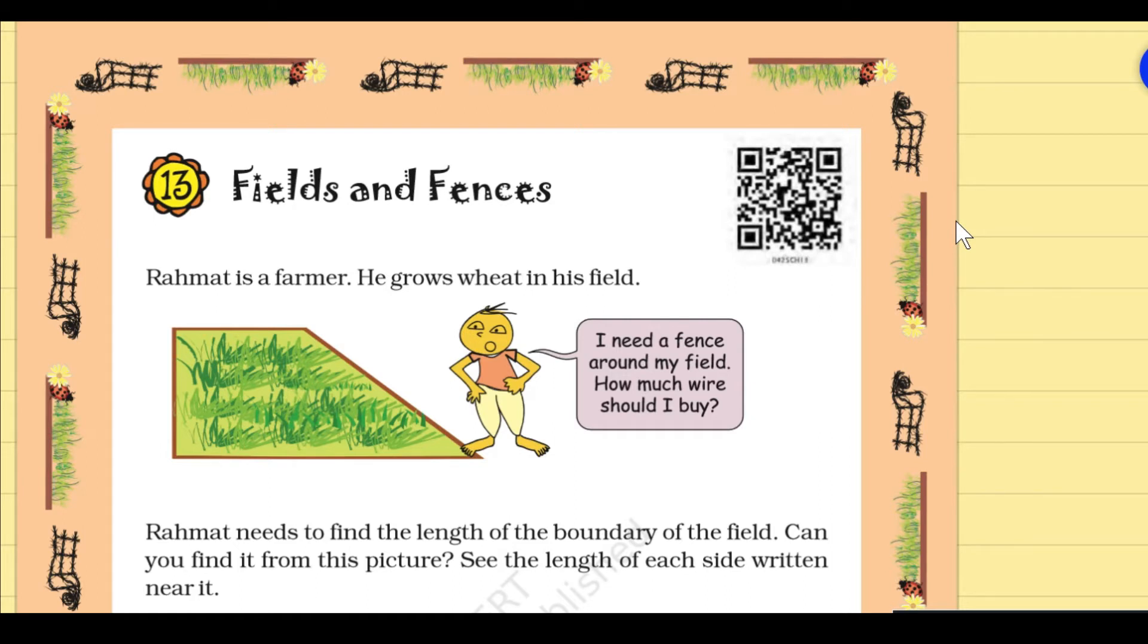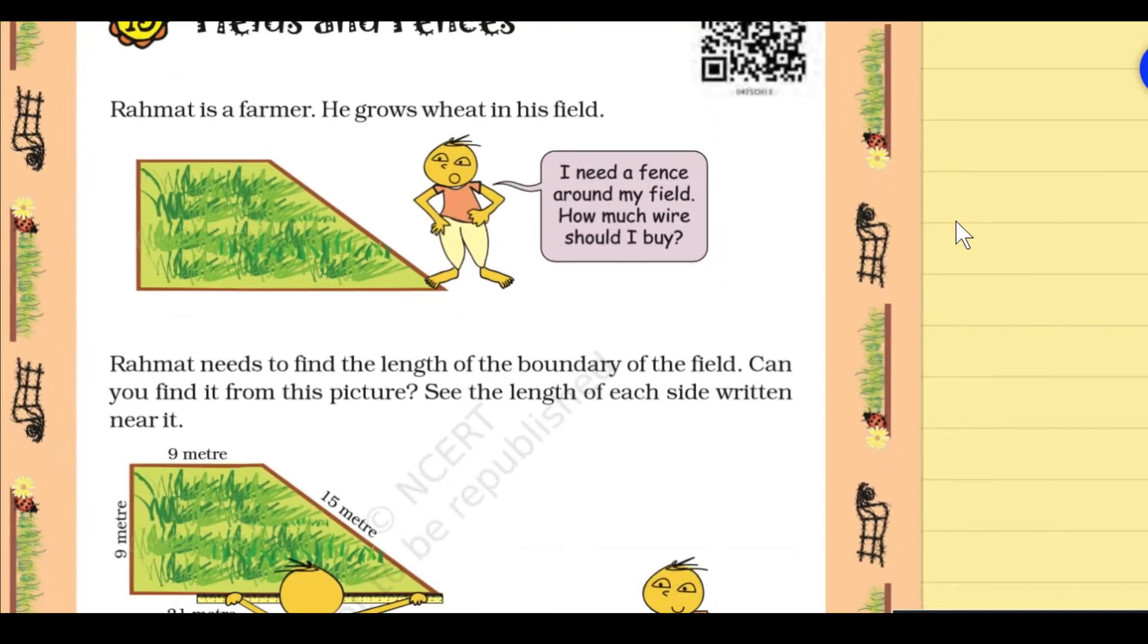And also we must keep some important points about the square and rectangle. Here, a shape is given which is having 4 sides. Let us count the sides first.